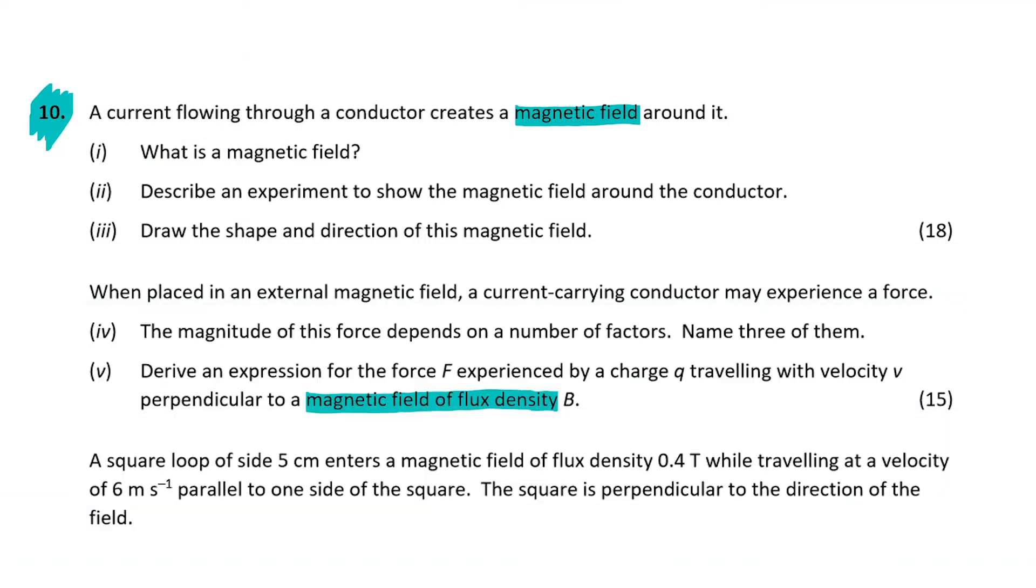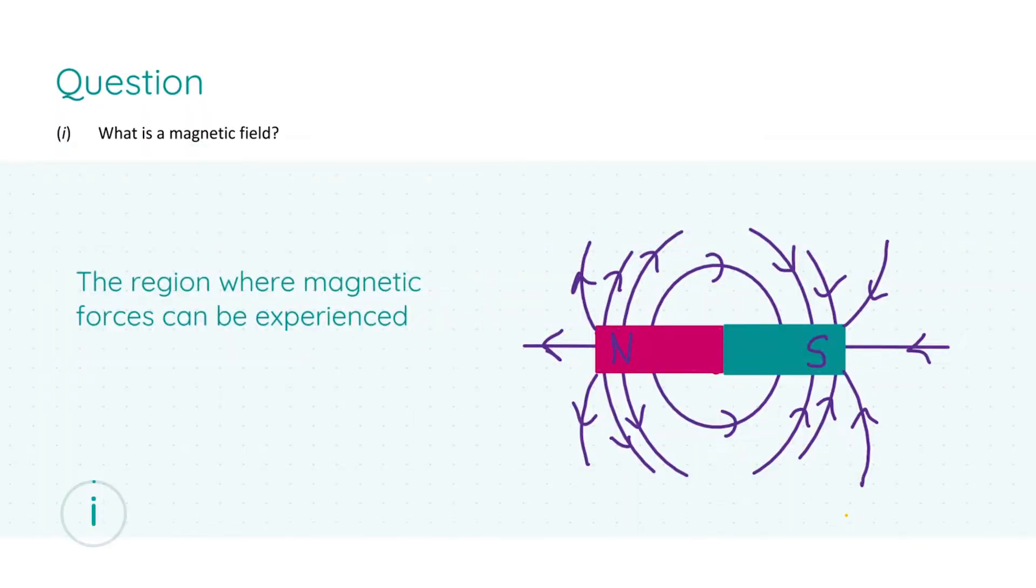We're going to begin by starting off with parts 1, 2 and 3 in which we are told that a current flowing through a conductor creates a magnetic field around it. Part 1 we're asked to define what a magnetic field is. All you have to say here is that it is the region where magnetic forces can be experienced. Just stating the statement in full will give you three marks.